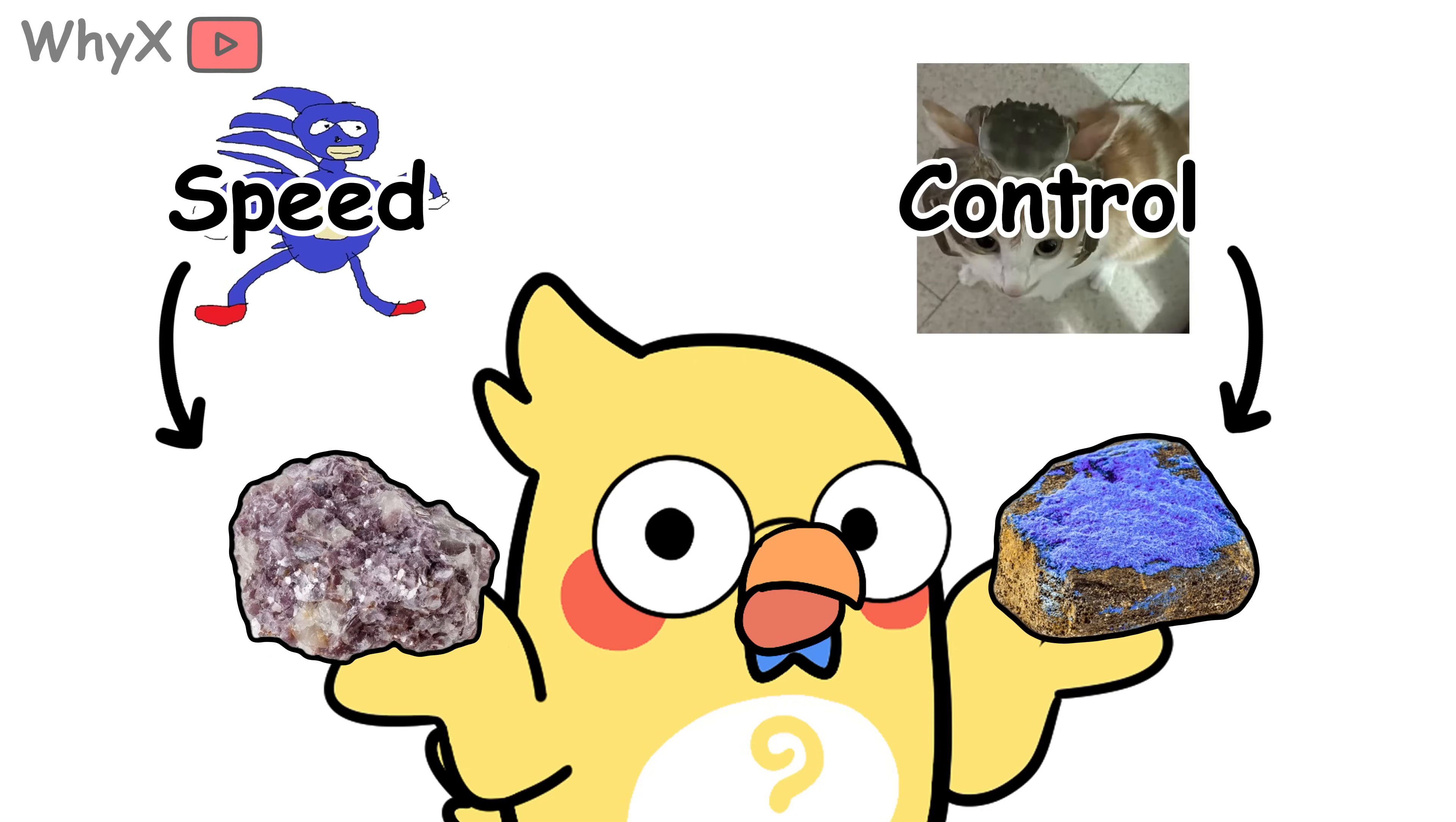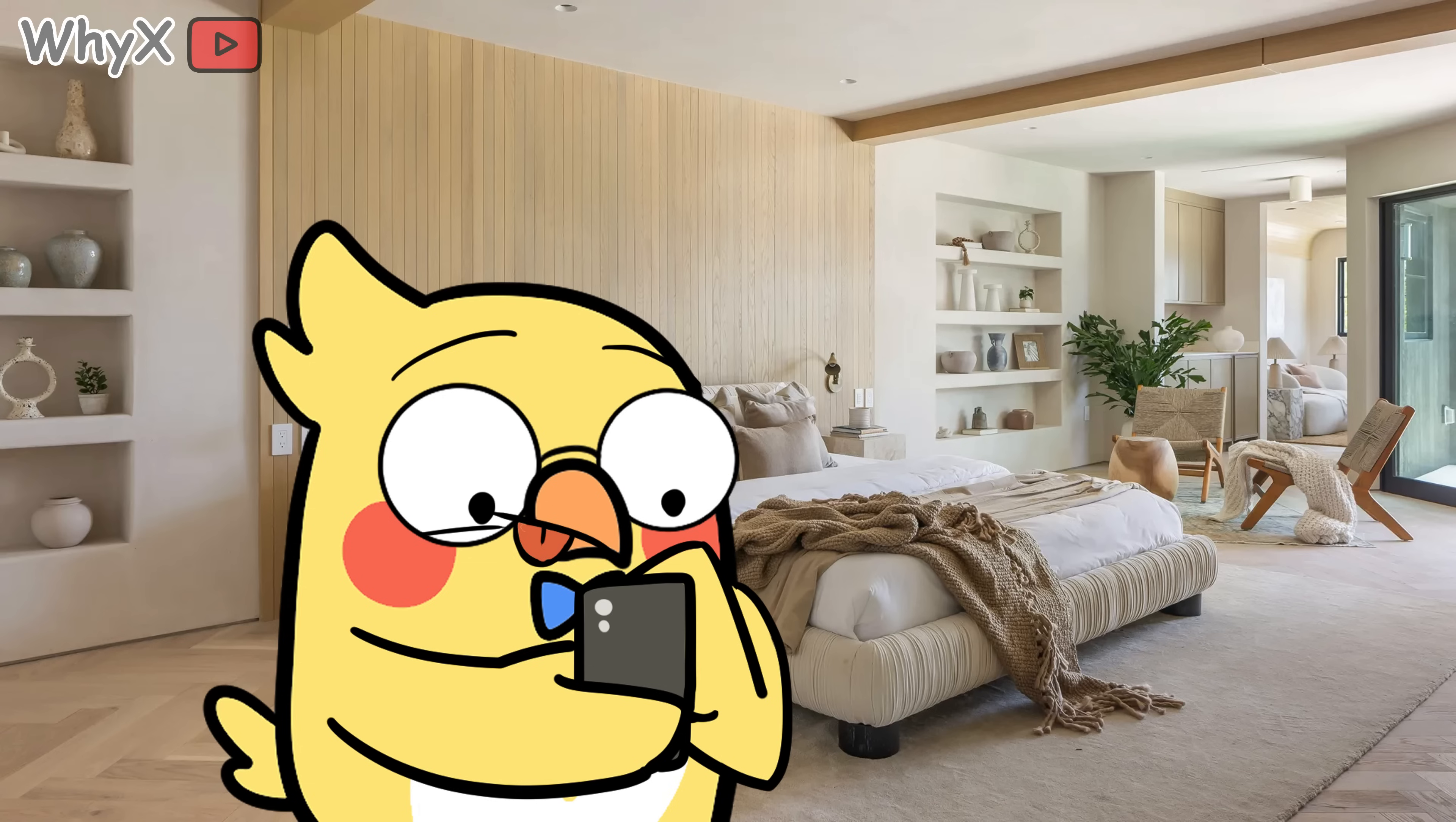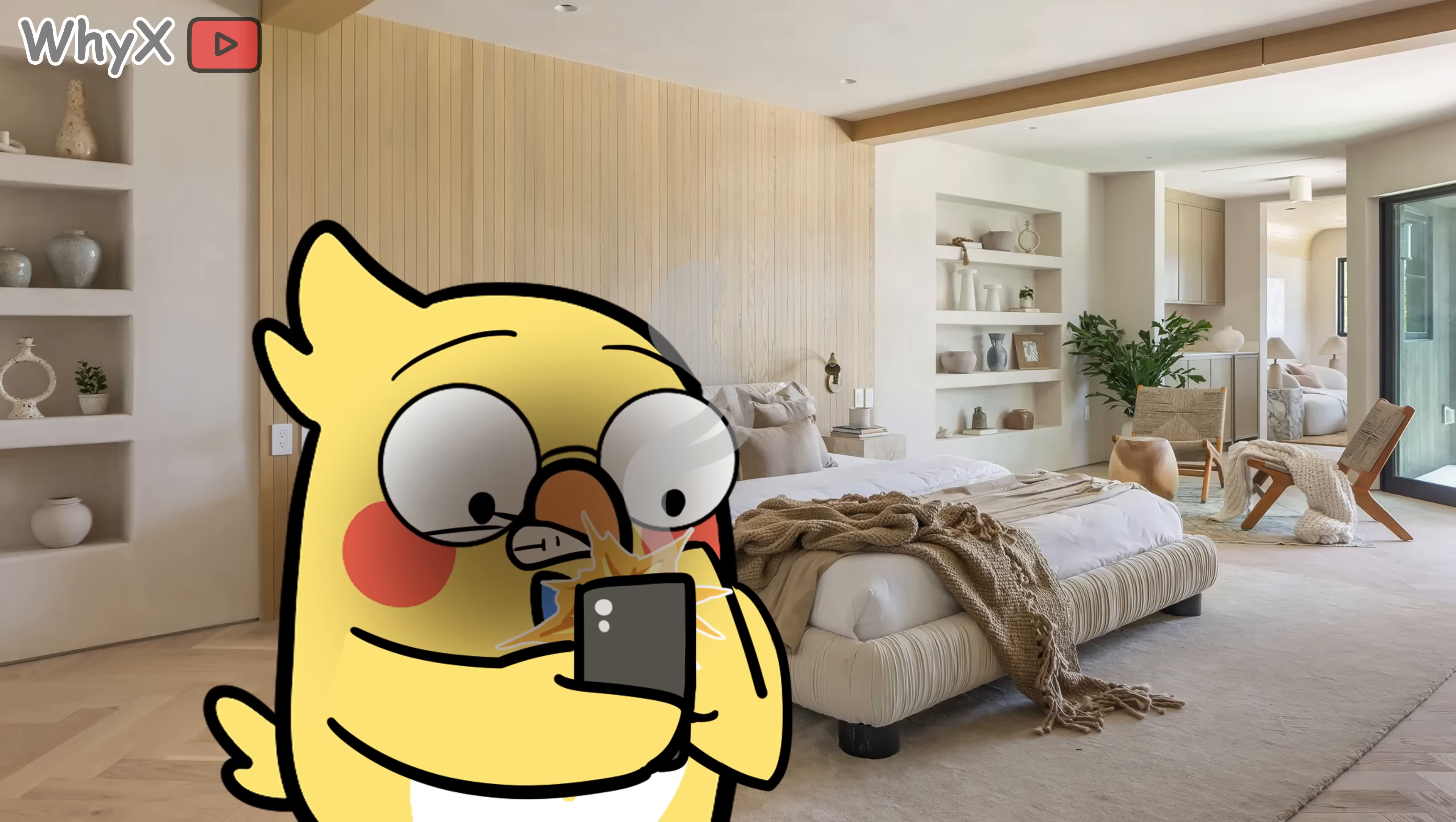If lithium is speed, cobalt is control. It helps your battery store more power without turning into a pocket-sized fire hazard. Without cobalt, your phone might work fine until it gets too hot and decides to audition for a fireworks show in your hand. Cobalt keeps things stable, making sure all that energy does not suddenly turn into heat you do not want.